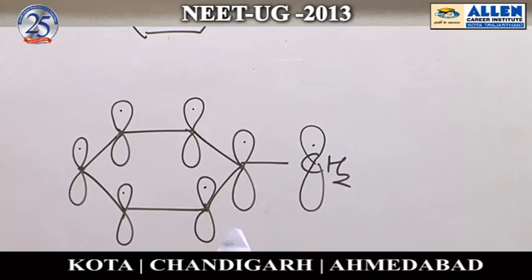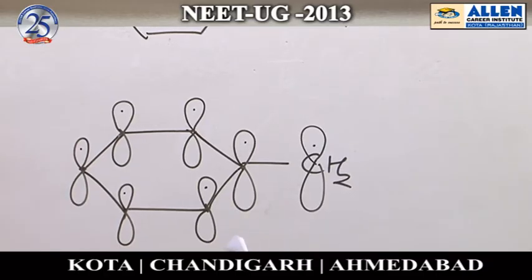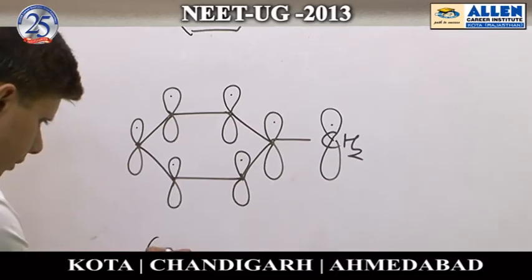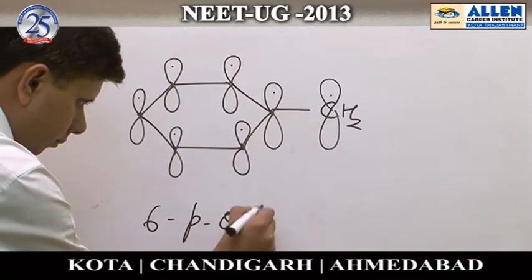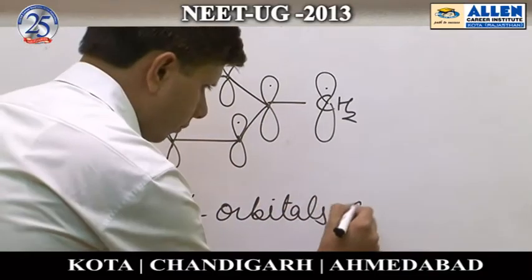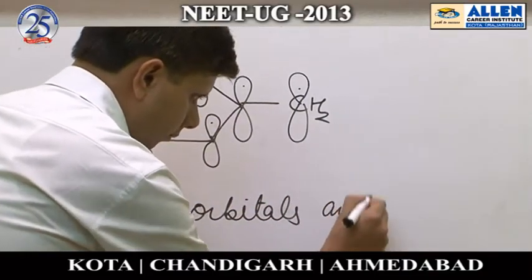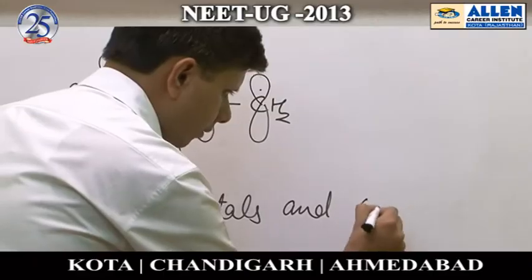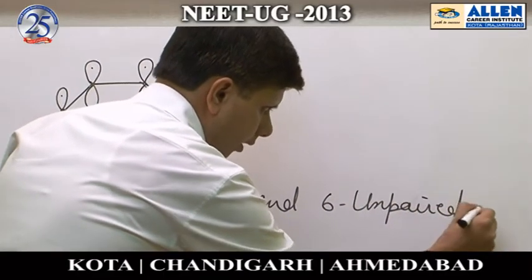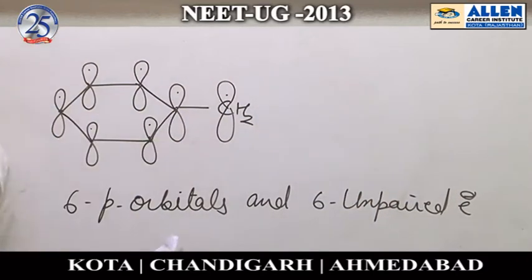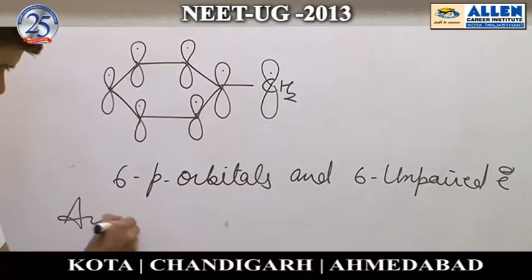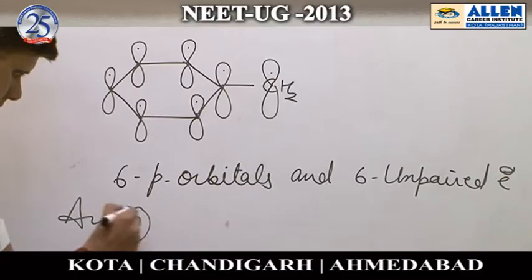So according to the options, it should be 6 p orbitals and 6 unpaired electrons which are responsible for aromaticity. So the answer is the second option.